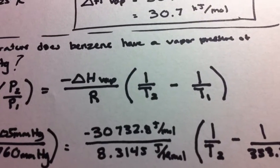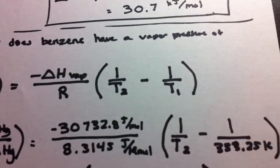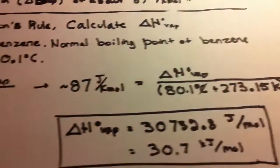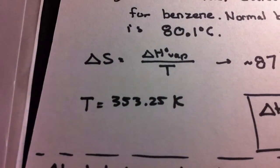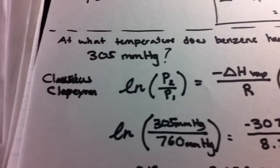R is going to be 8.3145 joules per Kelvin mole. Now, the temperatures, we're going to use what we used earlier, which is going to be temperature equals 353.25 Kelvin, and this is going to be used as a reference point.